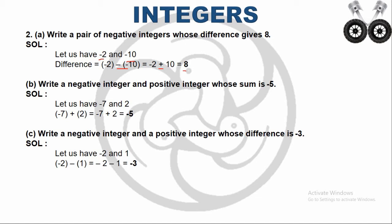Sub-question B: write a negative integer and a positive integer whose sum is -5. I take -7 as the negative integer and 2 as the positive integer, then add them: minus 7 plus 2. These 2 integers have different signs, so I subtract: 7 minus 2 is 5. The biggest number has a negative sign, so the answer is -5.